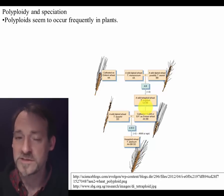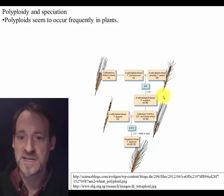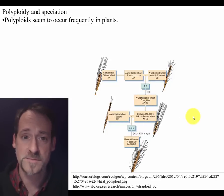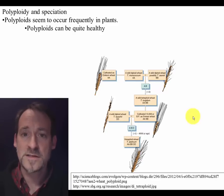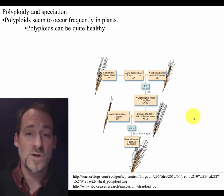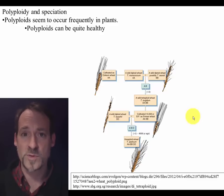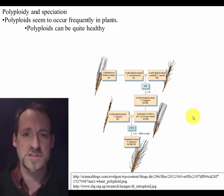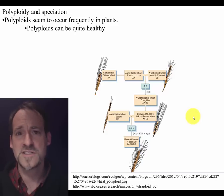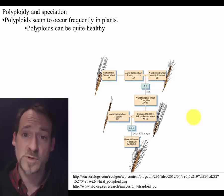This sort of weirdness has happened with a lot of plant species, and every time you get an event like this, potentially you end up with a completely new species. These species can be quite healthy. Often when you form a polyploid, you're putting together genes from two different parental species, but they can do really well together, and you can end up with offspring that are very vigorous and spread well.